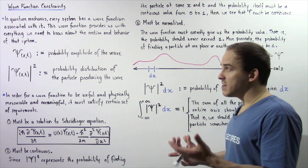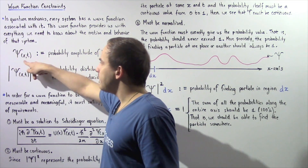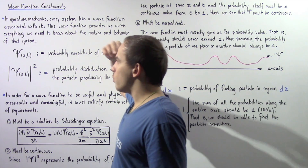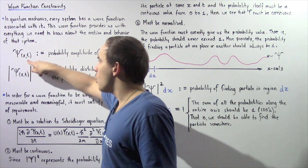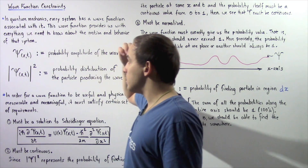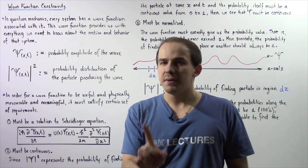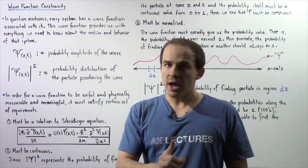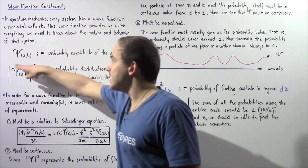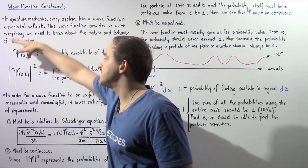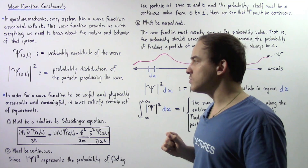Our system, for example, could be an electron. If we know what the wave function is — which depends on position x as well as time t — this gives us the single-valued probability amplitude of the wave produced by that system. Basically, it gives us information about the actual wave itself: the amplitude, how high or how low our wave goes.